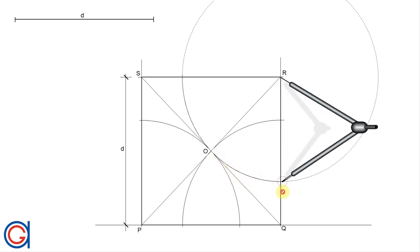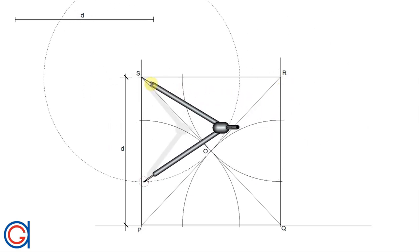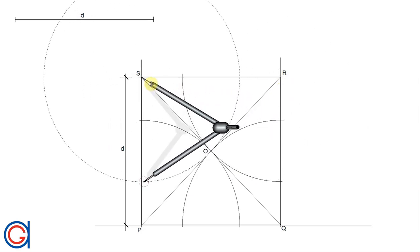And finally, setting our compass on vertex S and with the same radius, we scribe two more arcs, cutting the left side of the square and the top of the square.